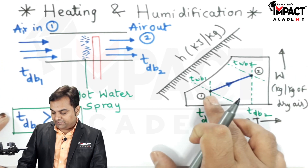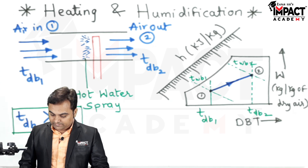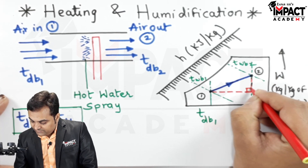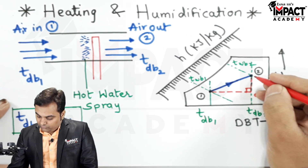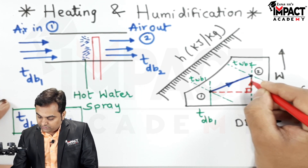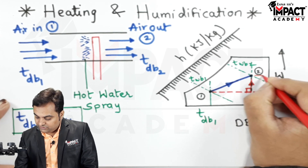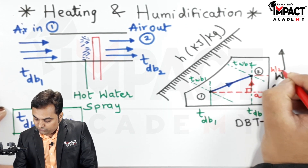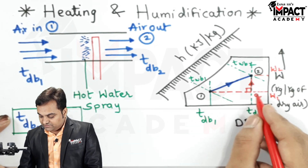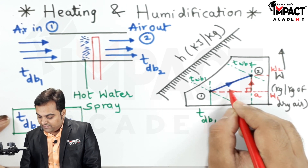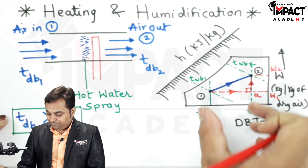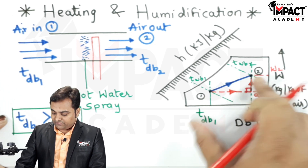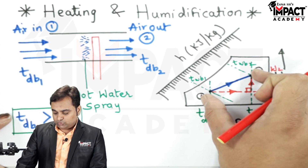Joining points 1 and 2 gives us the process line, which represents heating and humidification. From point 1, I draw a horizontal line and from point 2 a vertical line; their intersection is point 'a'. From 1 to a the moisture content remains the same at w1 while temperature increases from tdb1 to tdb2 — this is sensible heating. From a to 2 the temperature is constant while moisture increases from w1 to w2 — this is humidification. The resultant line 1 to 2 shows the combined effect.